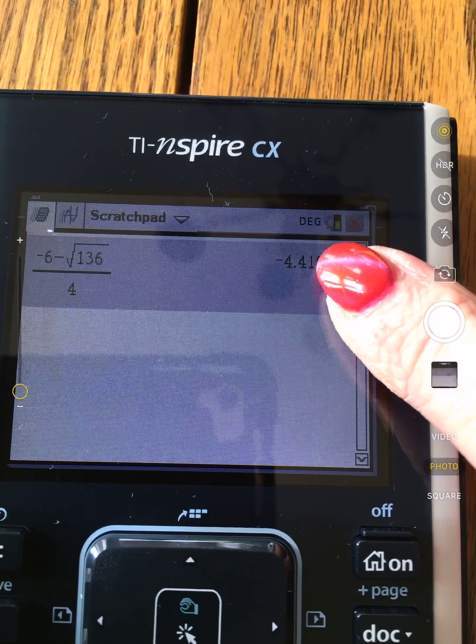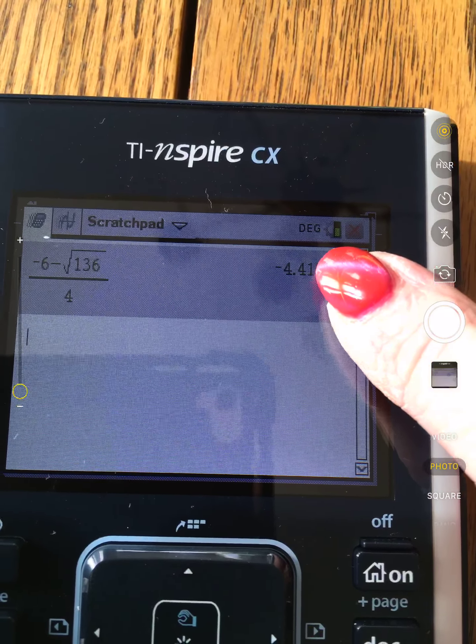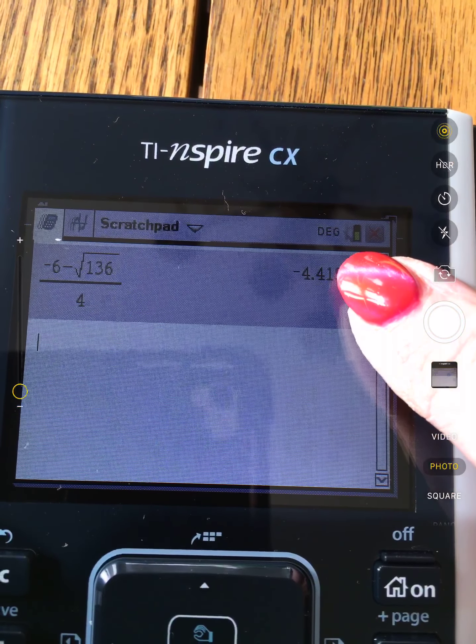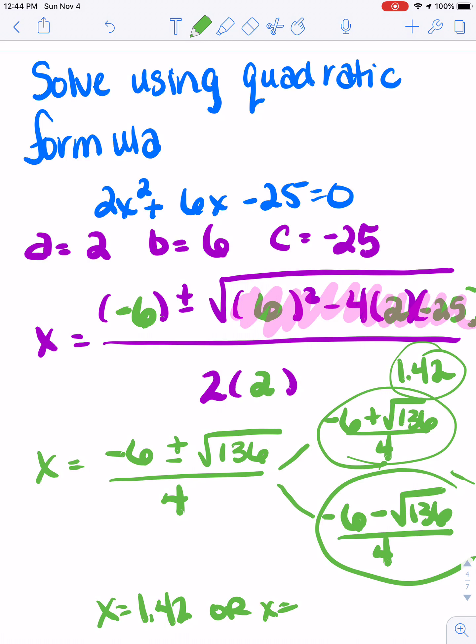Now if I look at this, I'm going to round to here. The number that comes after it is 5 or bigger, so that's going to be -4.42. So this is going to be -4.42. Those are your two answers.